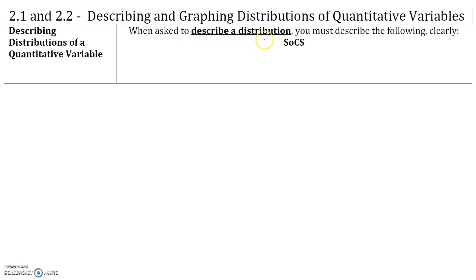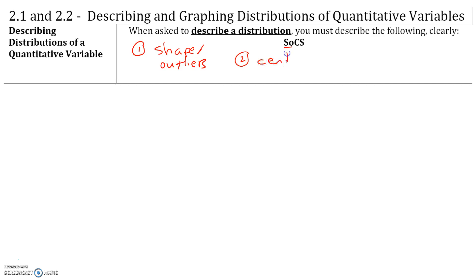Whenever we are asked to describe a distribution, we must describe the following clearly. First, we must describe the shape of the distribution and whether the distribution has any outliers — SO, shape and outliers. Second, we must describe the center of the distribution, the C. And third, we must describe the spread of the distribution. We will talk more about each of these in detail when we get to examples.